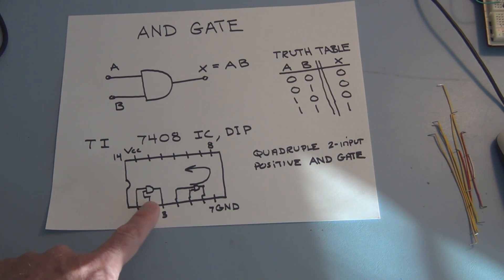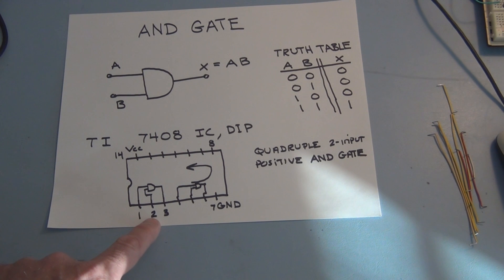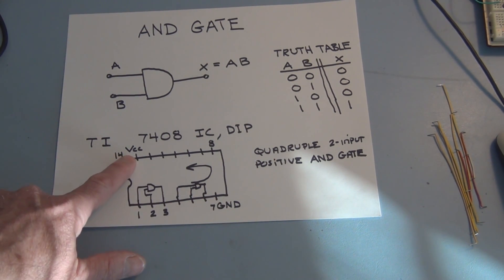And this is how they are wired. Here's the first one. The two inputs are on pin 1 and 2, and the output for the first gate is on pin 3. Pin 7 is ground, and pin 14 is the supply voltage for the chip. In this particular case, we'll apply 5 volts.